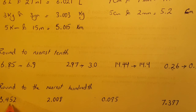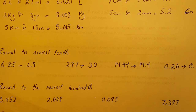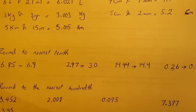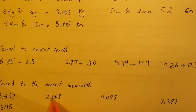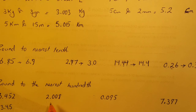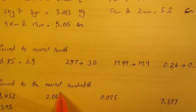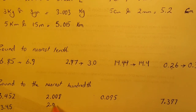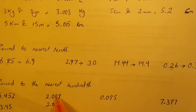For 3.452 rounded to the nearest hundredths: the hundredths digit is 5, followed by 2 — round down — so it rounds to 3.45. For 2.008 rounded to nearest hundredths: the hundredths digit is 0, followed by 8 — round up — so it's 2.01.